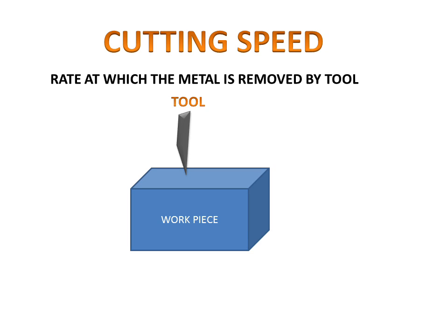Today we will discuss cutting speed, feed, and depth of cut. Cutting speed is the rate at which metal is removed by the tool — how fast our tool is at removing metal from the work piece. Let's take an example.